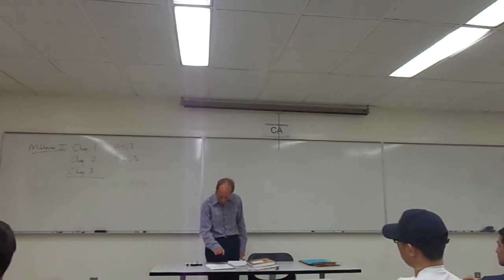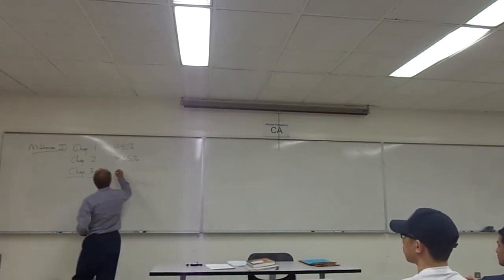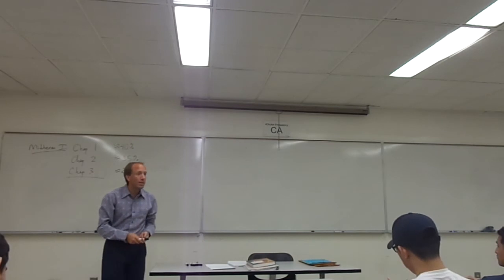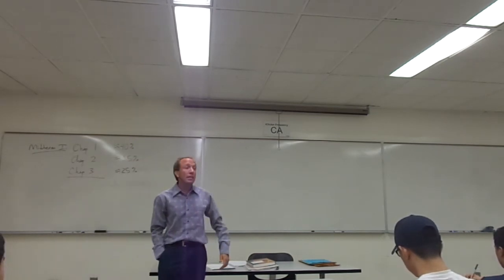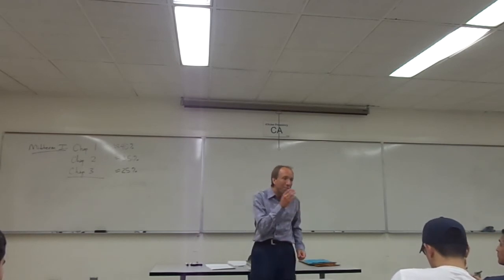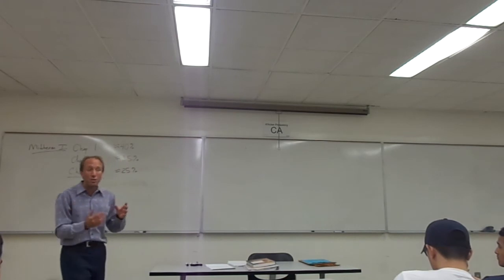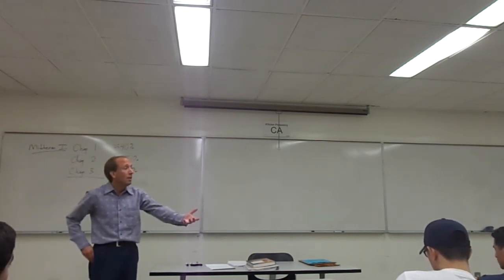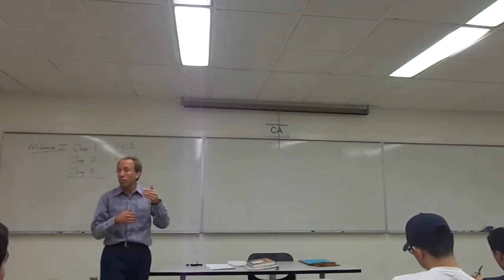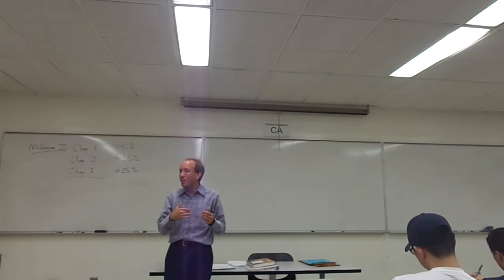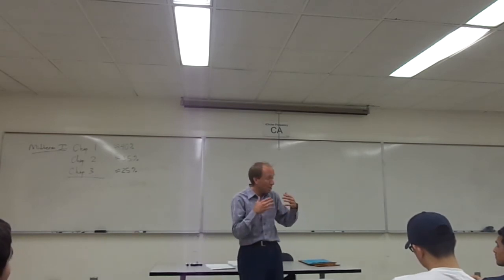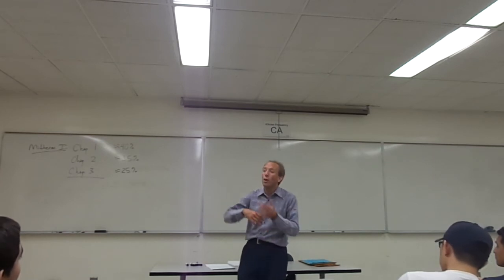Chapter three will be about 25% of the test. This covers the determinant of a matrix. I'd like you to know how to calculate the determinant — I may deliberately give you a 4×4 matrix or bigger so you must use cofactor expansion. With a 2×2 or 3×3 you can use the arrow method, which is just a memorization trick, but be sure to also know the cofactor expansion method and the ERO process.